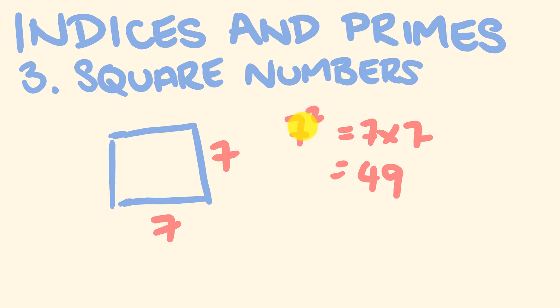So the opposite of a square number is a square root. Let me show you how these look. We know that 7 squared equals 7 times 7, which equals 49. The square root would be written like this.